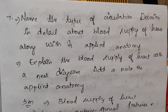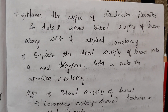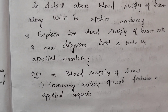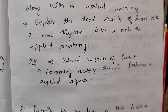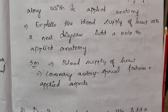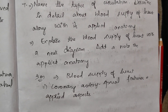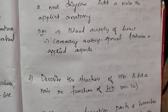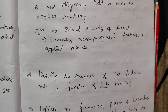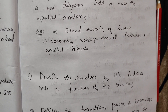Name the types of circulation. Describe in detail the blood supply of the heart along with its applied anatomy, and explain the blood supply of the heart with a neat diagram — add a note on applied anatomy. These are two similar questions appearing 2 times. For 5 marks: blood supply of heart, coronary arteries, special features, and applied aspects.